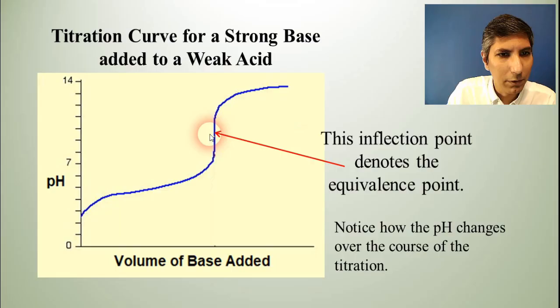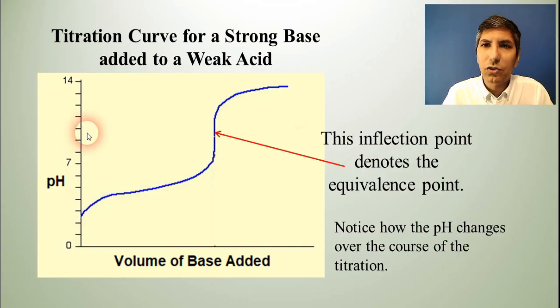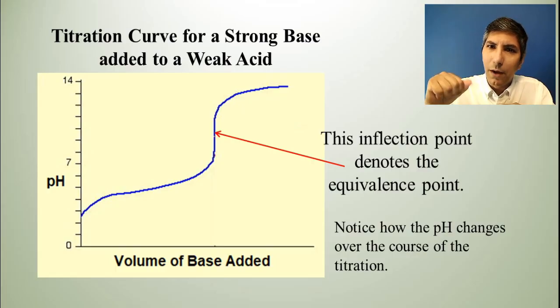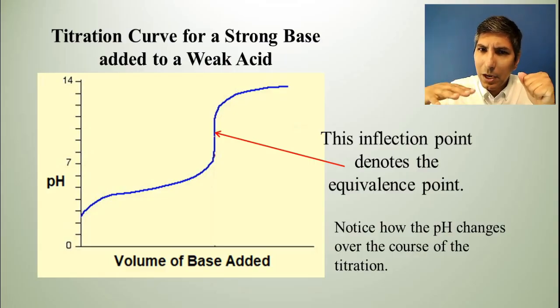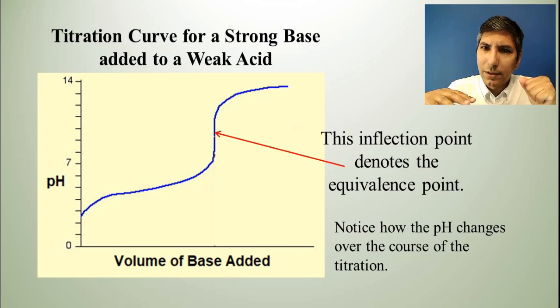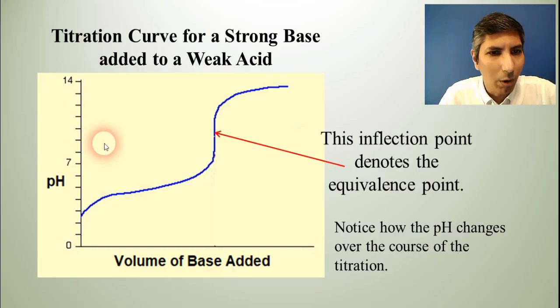Now we can drag this equivalence point over and we can see about where the equivalence point is on the pH scale. Looks like it's somewhere between 8 and 9, if I'm looking at this correctly. And that makes sense. If you have a strong base and a weak acid, you would expect your equivalence point to be on the basic side, right? Because the base is stronger. If it had been the other way around, a strong acid and a weak base, you would expect the pH of your equivalence point to be on the acidic side, because in that case, the acid would be stronger. So that's what this titration curve looks like.